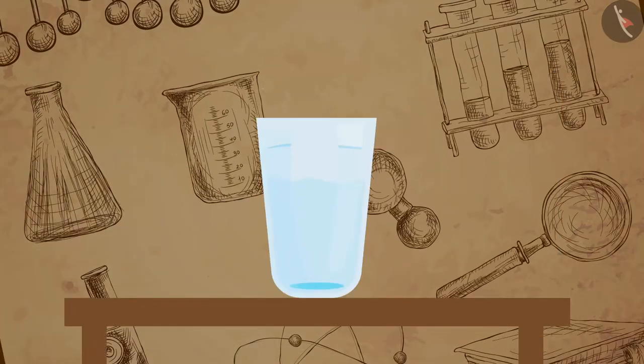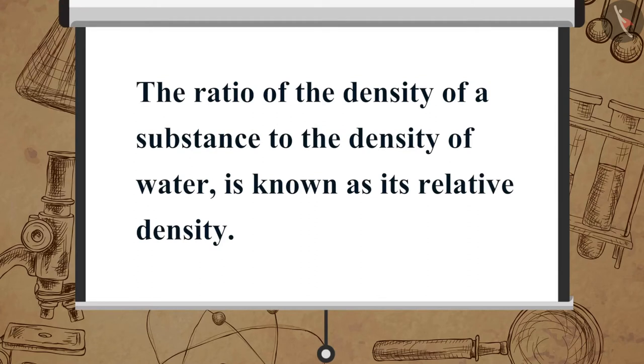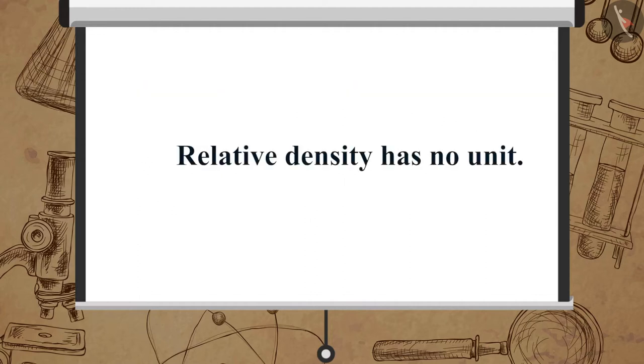We can find out if an object will sink or float in water by comparing its density with that of water. The ratio of the density of a substance to the density of water is known as its relative density. Relative density does not have a unit as it is the ratio of similar quantities.